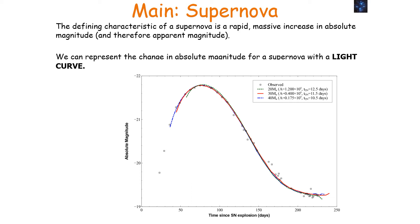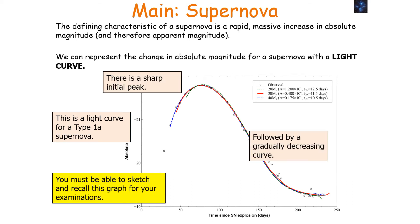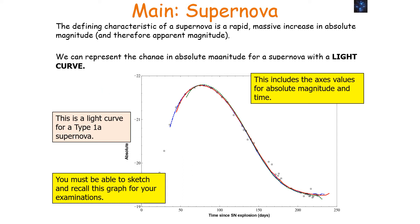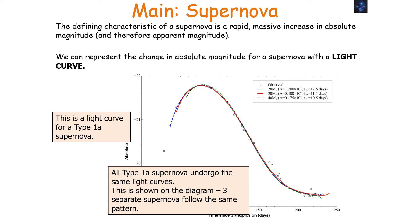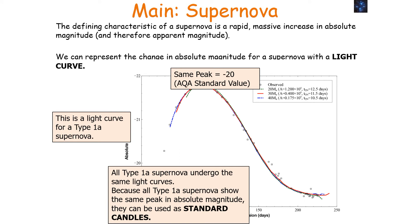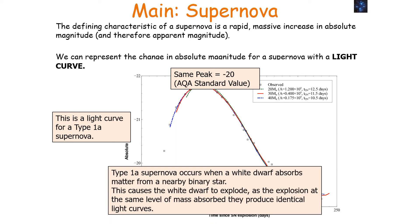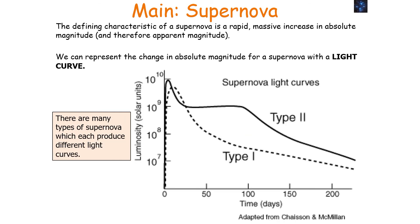A type 1a supernova is different — all type 1a supernovae have the same luminosity, so we can use them as standard candles. The defining characteristic of a supernova is a rapid massive increase in absolute magnitude and therefore apparent magnitude, and we can represent this with a light curve. This is a light curve for a type 1a supernova — there'll be a sharp initial peak followed by a gradual decreasing curve, with all type 1a supernovae following the same pattern. A type 1a supernova occurs when a white dwarf absorbs matter from a nearby binary star, causing it to explode at the same level of mass each time, producing identical light curves.